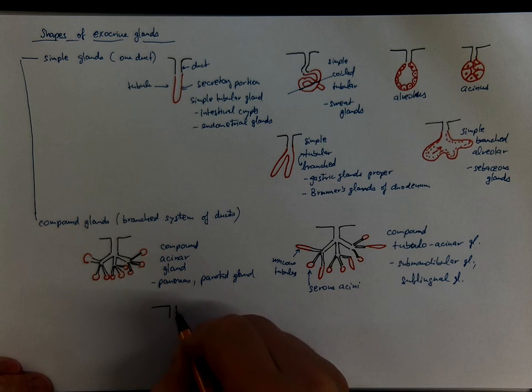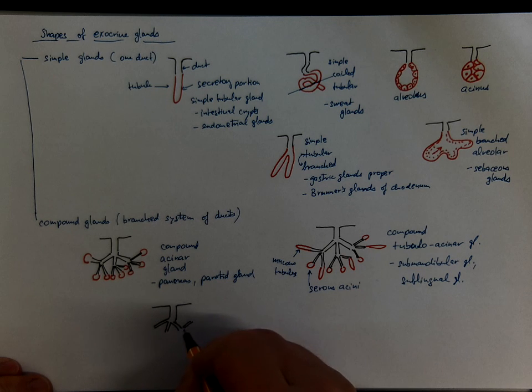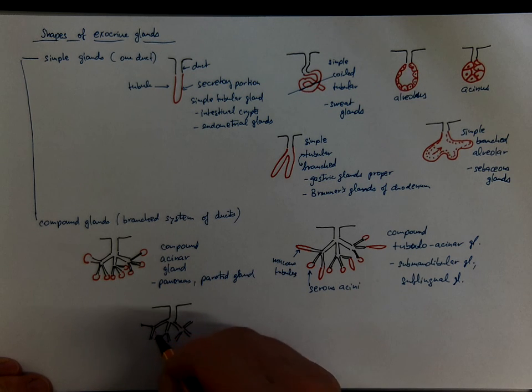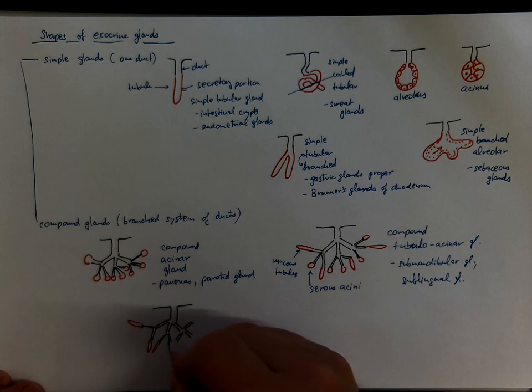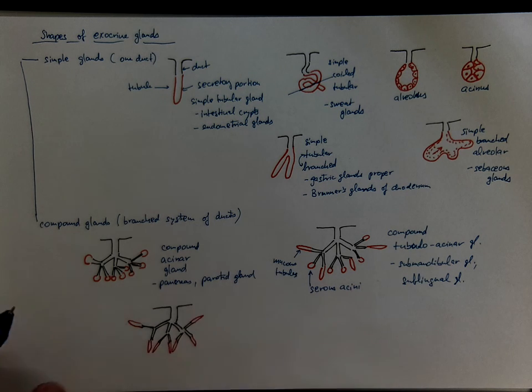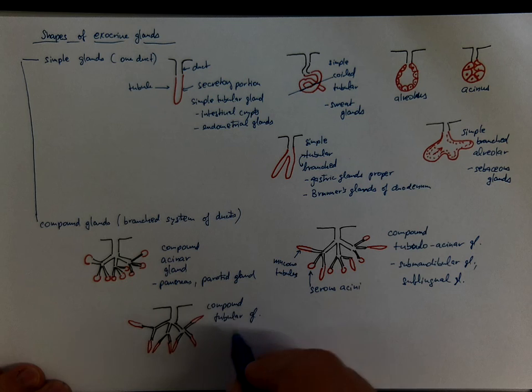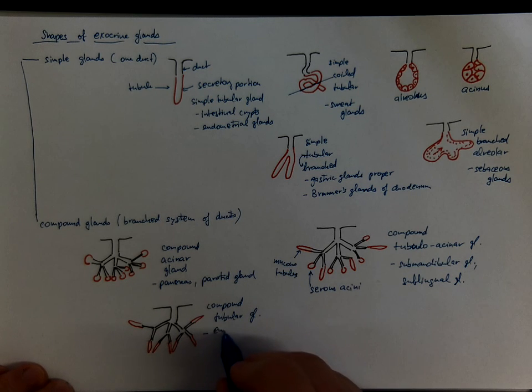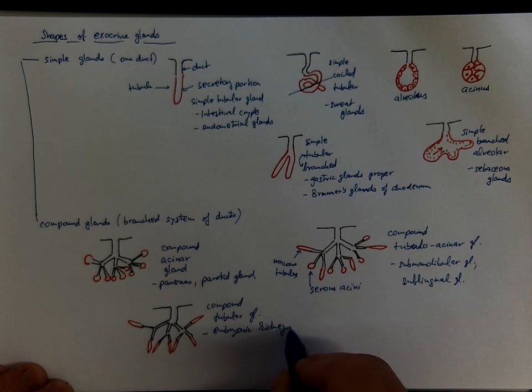And there could be also a gland where the secretory portions would be tubules only. And this is a pattern you could see in the embryonic kidney. So it would be technically a compound tubular gland. And that's how the embryonic kidney looks like during the development.